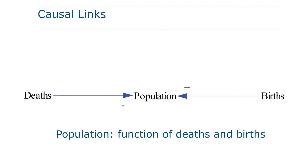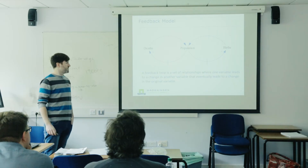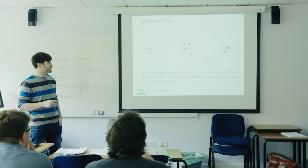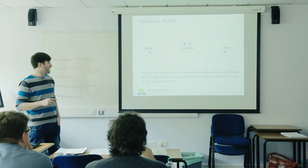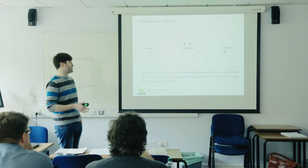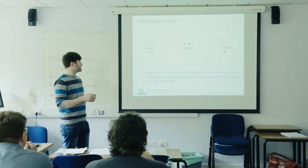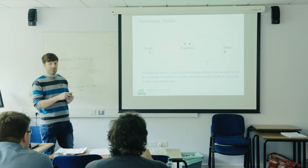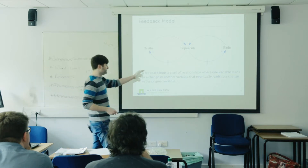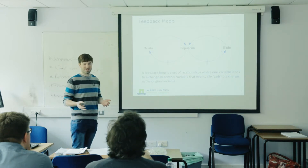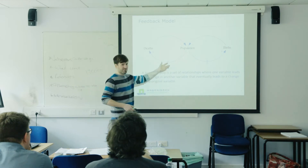As we see here, population is a function of death and birth. We can also make it a feedback loop. We see population and death here — more deaths lead to a lower population, more births to a higher one. A feedback loop is a set of relationships where one variable leads to another, and it might also change the original variable.